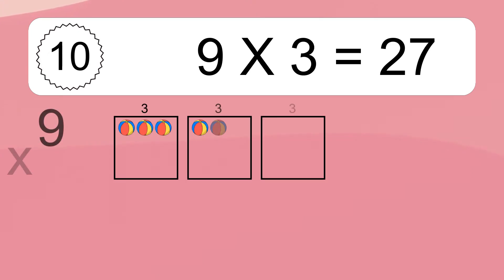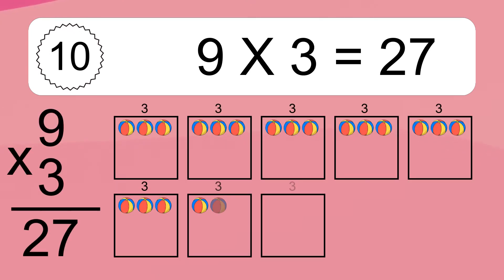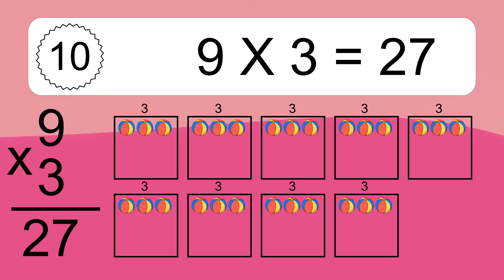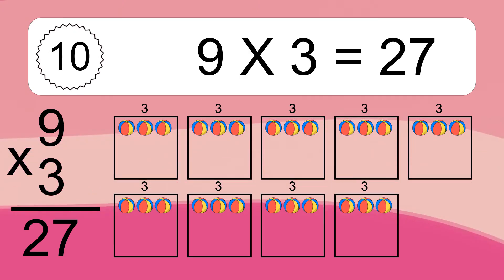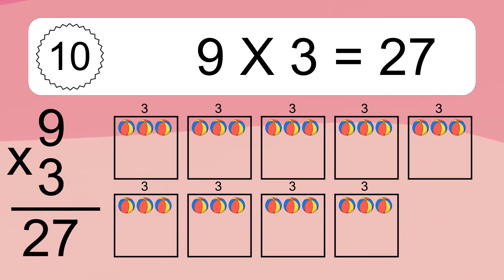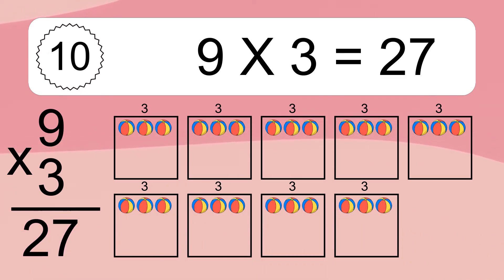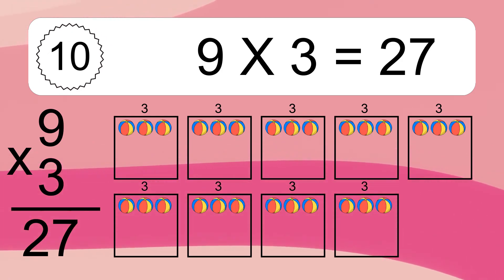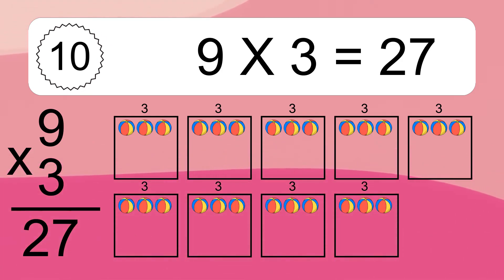Nine times three equals what? Nine times three equals twenty-seven. We have nine boxes, and each box has three colorful balls inside. If you count all the balls in all the boxes together, you will have nine times three balls. This equals twenty-seven balls.